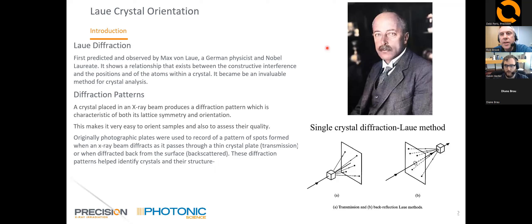He did this experiment in 1912 and was given the Nobel Prize in 1914. This technique has been used for maybe 90 to 100 years using photographic plates to study crystals. It's not as popular as other techniques — it's quite complicated to analyze the results, and it takes time and patience to acquire and analyze the patterns, which used to be done by measuring spots in the image and referring to charts.